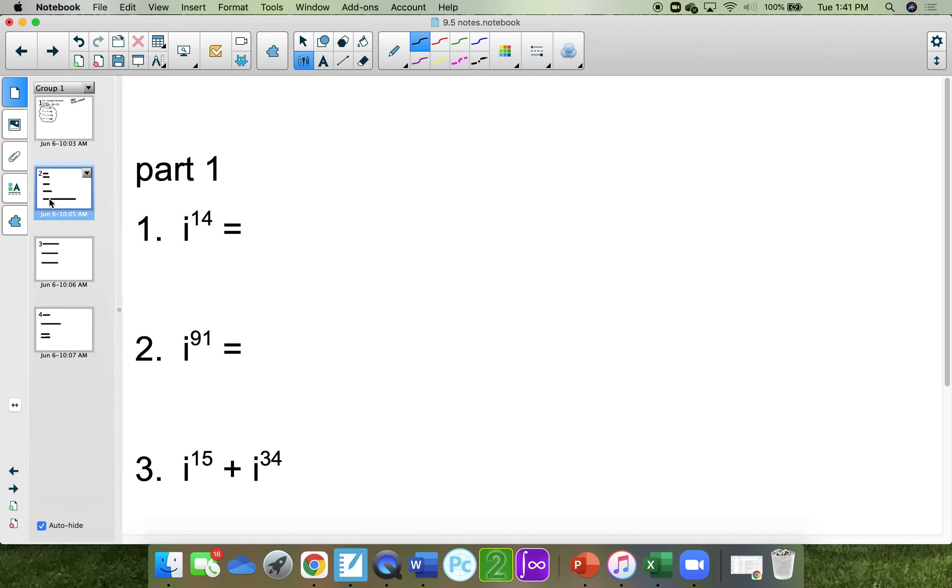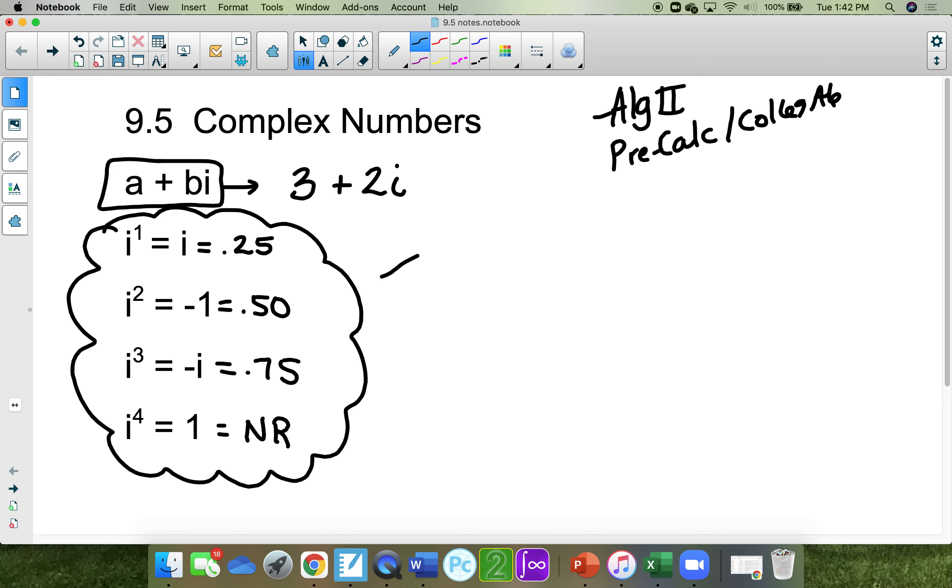For the first part of the assignment, they might ask you to find i to the 14th power. All you do is take 14 on your calculator and divide it by 4, and it's 3.5. Which means that you went through this chart 3.5 times through it, and 3.5 would give you a negative 1.